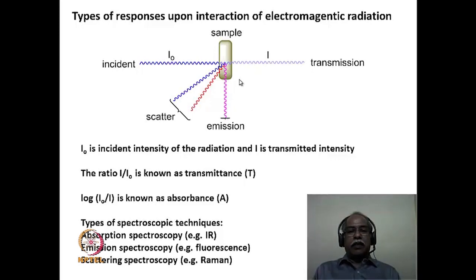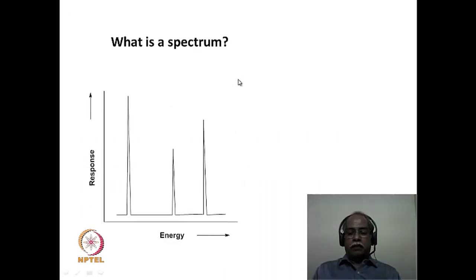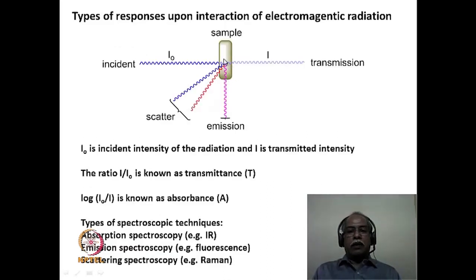Instead of absorbing the light, the sample can simply scatter the light. If it scatters light of the same wavelength, we call it Rayleigh scattering. If it scatters light of different wavelength, we call it Raman scattering. Raman spectroscopy is based on the scattering phenomena, and we deal with Raman spectroscopy along with vibrational spectroscopy for structure elucidation purposes. The molecule can also emit light, in the form of light emission, which corresponds to emission spectroscopy — fluorescence spectroscopy and phosphorescence spectroscopy are emission spectroscopy techniques.